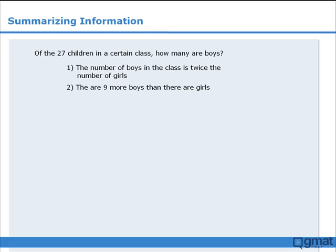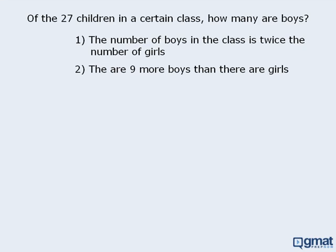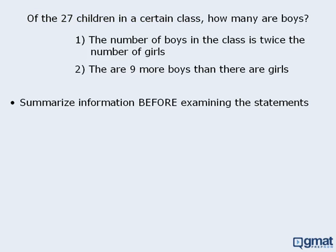In this lesson, we will examine a useful strategy to consider when tackling data-sufficiency questions. As you may know, some data-sufficiency questions provide useful information in addition to posing a question. In this example, the target question asks us to determine the number of boys in a certain class, but we are also given some information about the class — it has 27 children. In cases where additional information is provided, it is often useful to summarize the information before examining the statements.